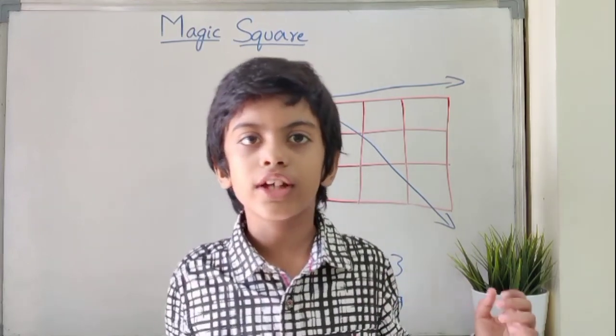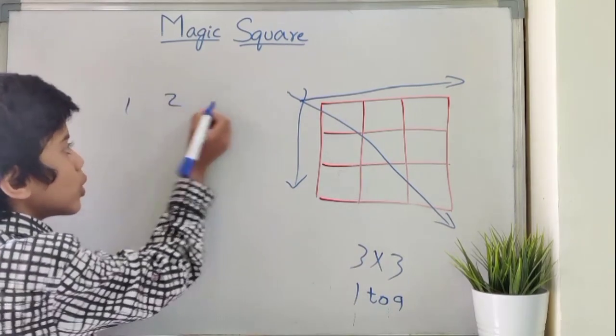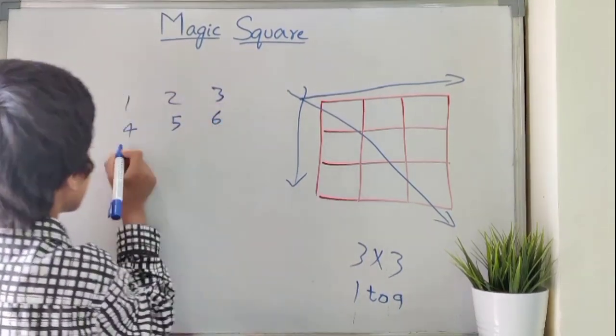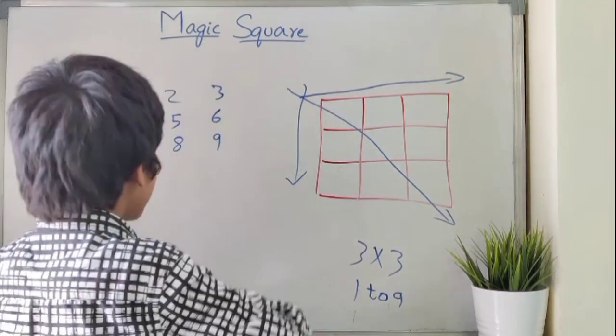Now let's get into the solution. Write 1 to 9 numbers in this way. Now let's draw a box between these numbers.